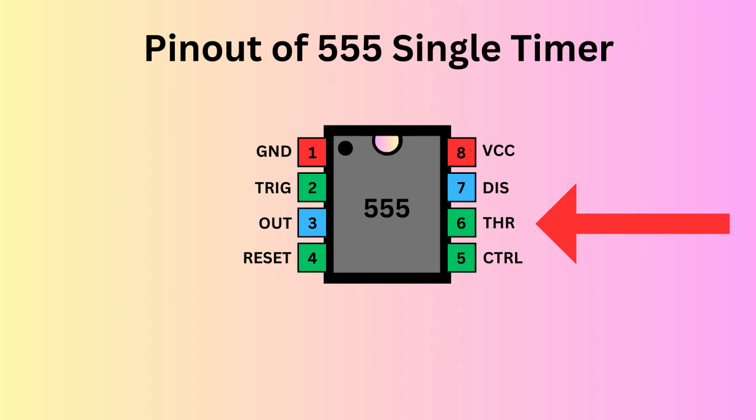Pin 6, the threshold pin, monitors the voltage of the capacitor in the circuit. Pin 7, the discharge pin, manages the timing capacitor's charge and discharge cycle. Pin 8, known as VCC, supplies power to the IC.